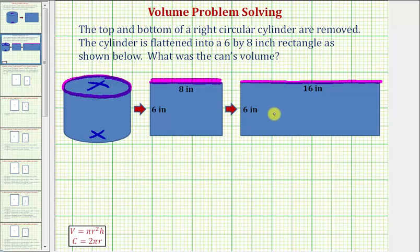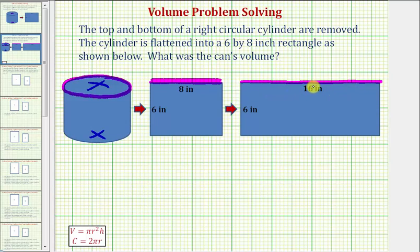In order to determine the volume of this right circular cylinder, we need to determine the radius of the top and bottom. The key to solving this problem is to recognize that the circumference of this circle would be equal to 16 inches. The circumference of a circle is equal to two pi r, so we have two pi r equals 16 inches.